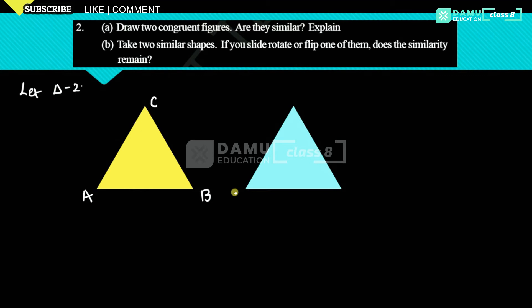The second triangle has vertices E, F, G. The sides of the first triangle are x cm, y cm, and z cm. The second triangle also has corresponding sides x, y, and z.